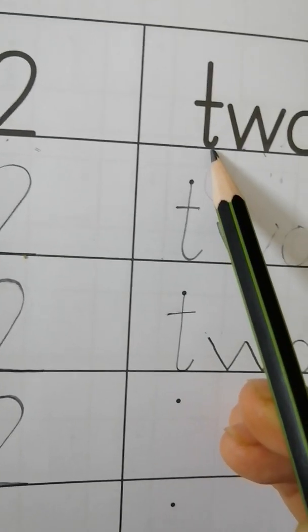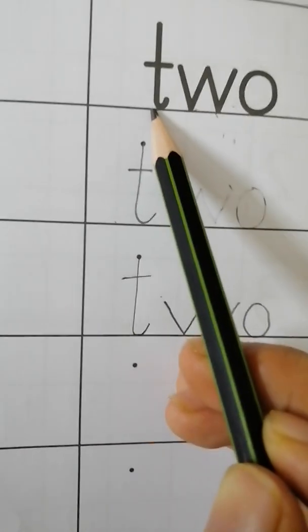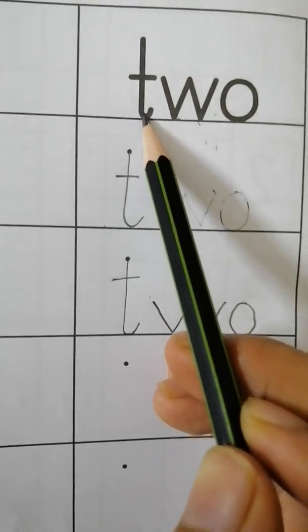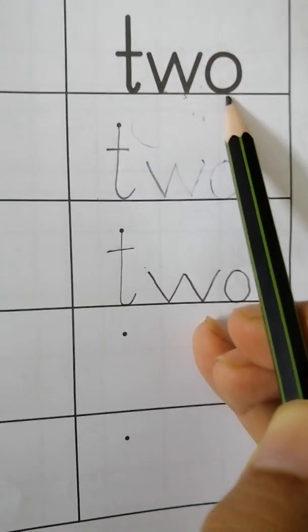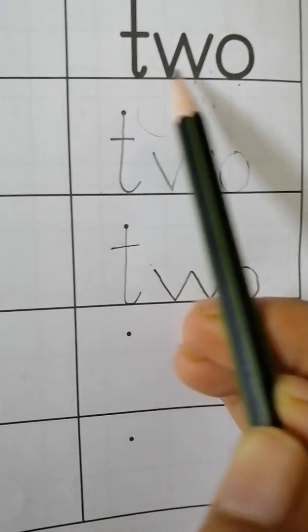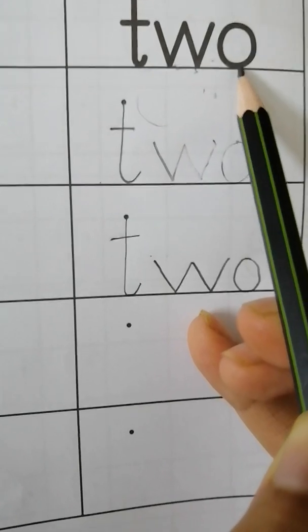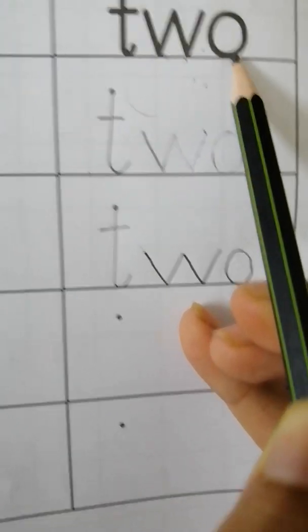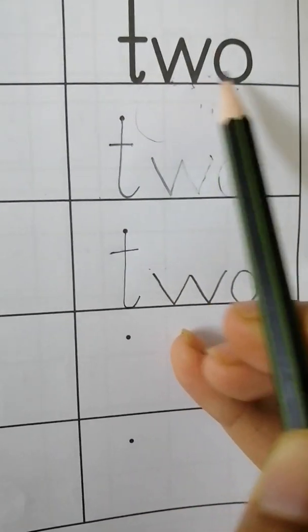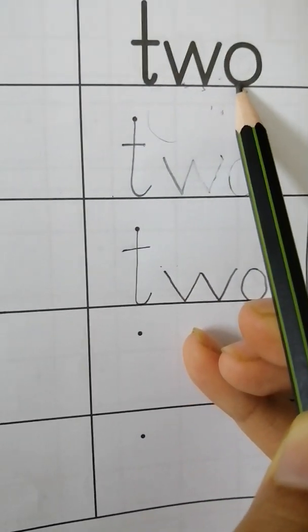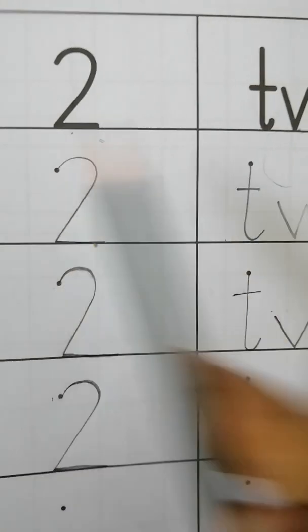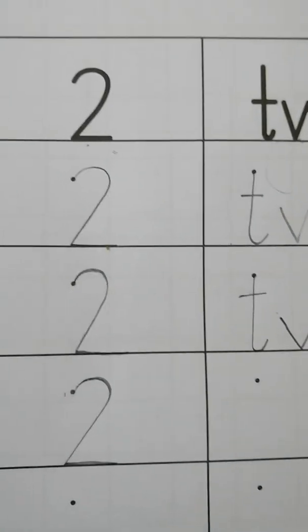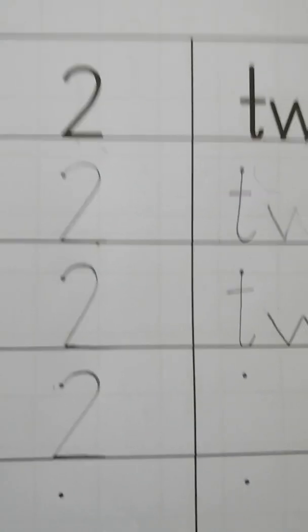It's number 2 and the spelling of number 2 is T, W, O. 2. T, W, O. 2. T, W, O. 2. T, W, O. 2. Start writing and learn the spelling.